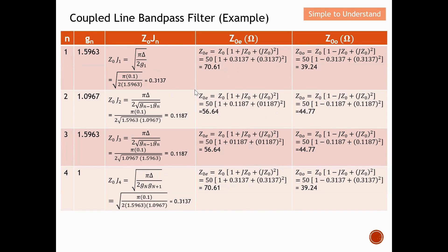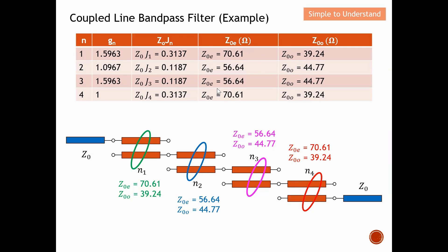Summarizing the results from the second video: the even and odd mode characteristic impedances for section one are shown, and for section two. Note that n2 equals n3 and n1 equals n4. One important point I want to highlight here that I may not have emphasized previously: the length of each coupled line section must be lambda over 4, or 90 degrees. With that, we are ready to design the coupled line.